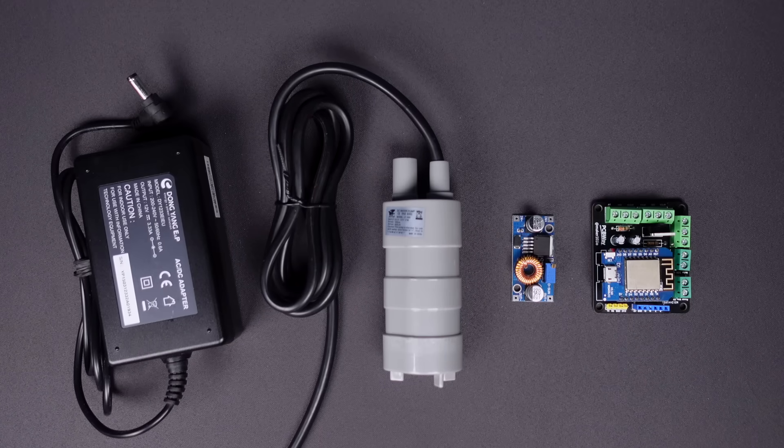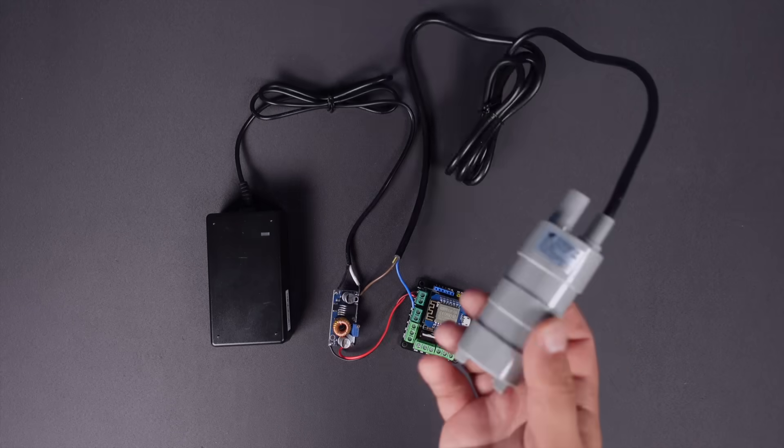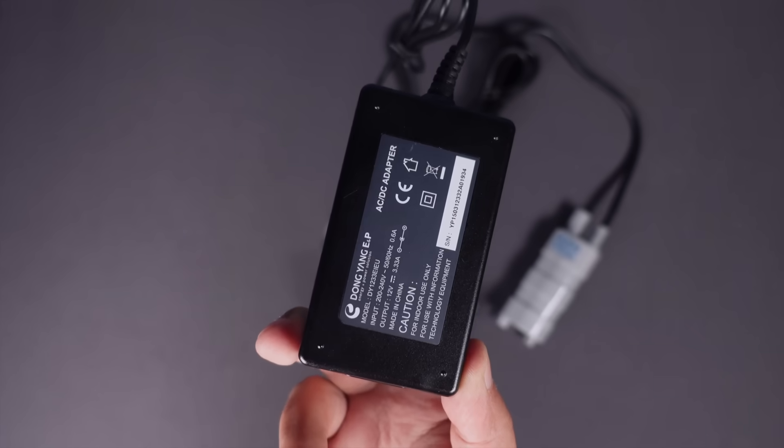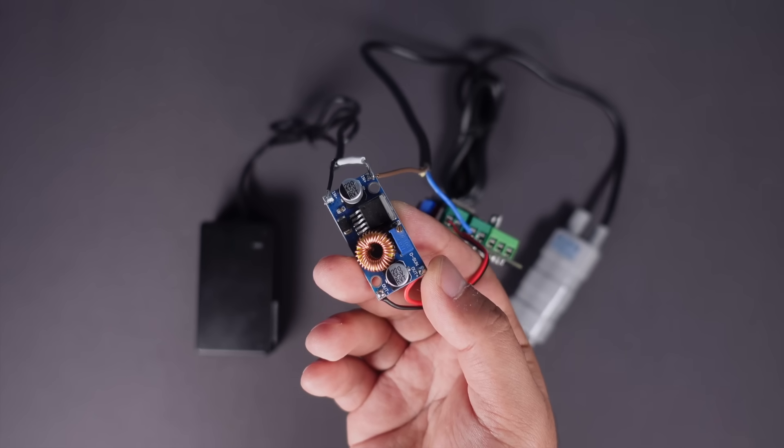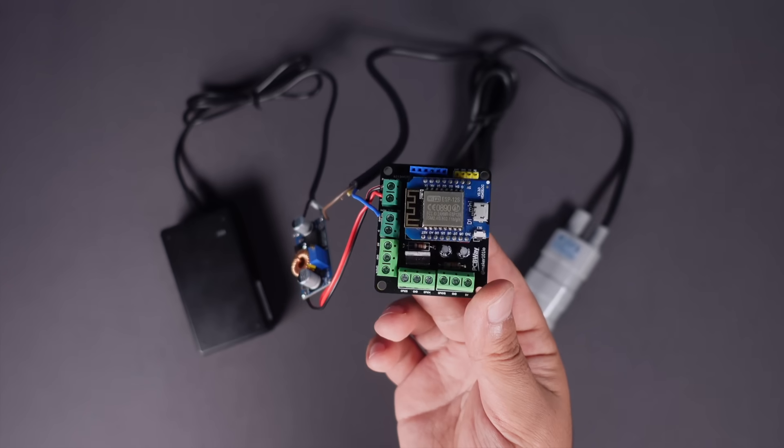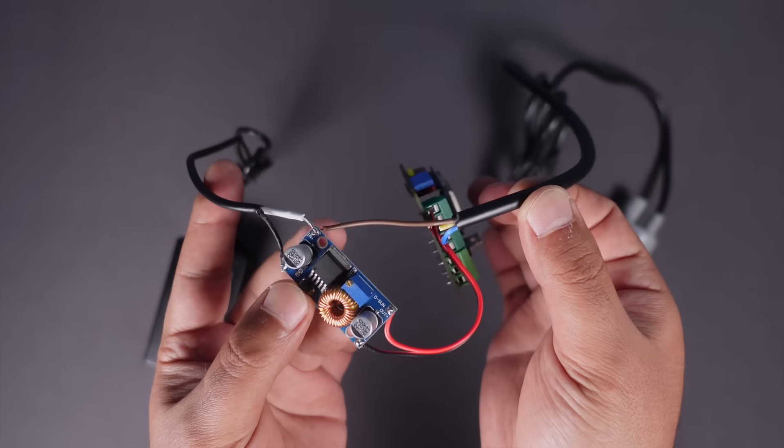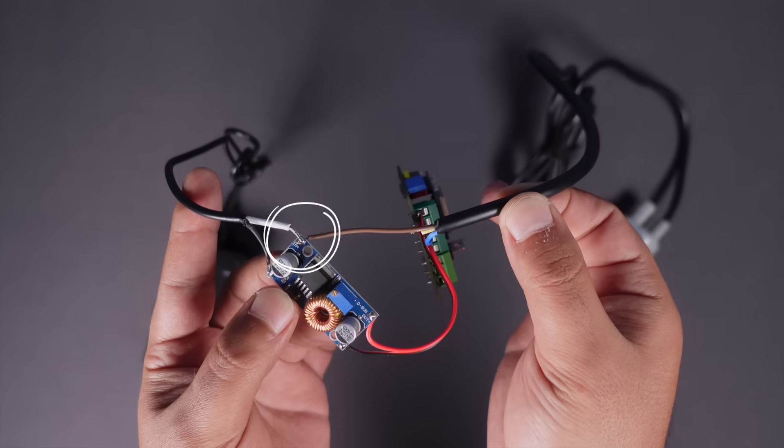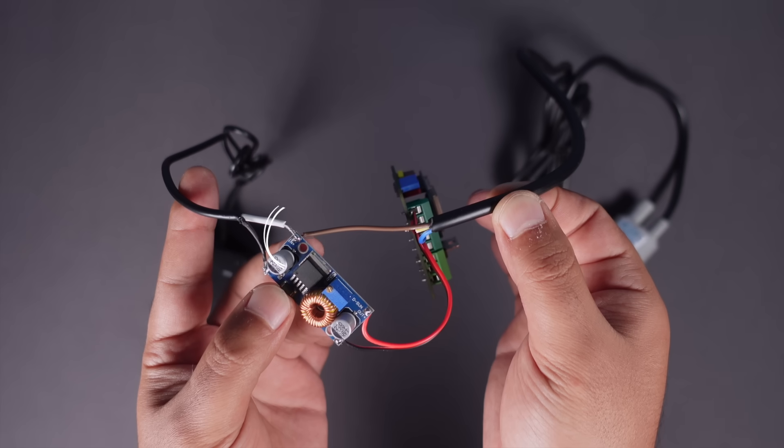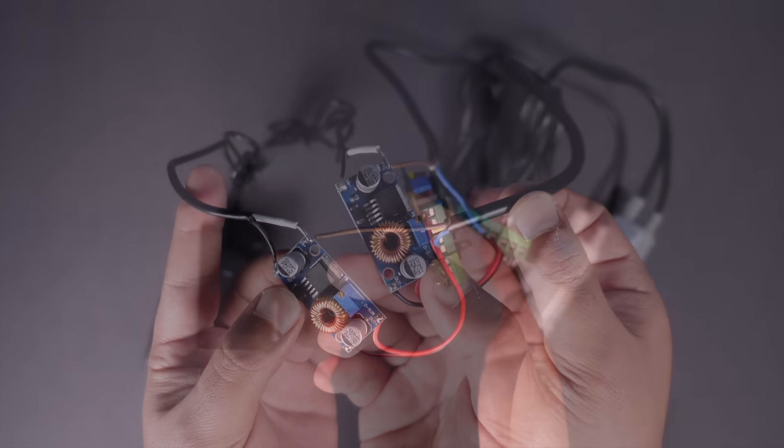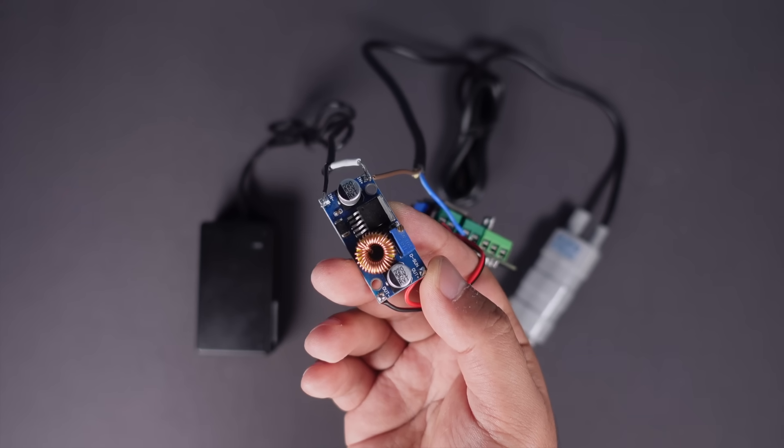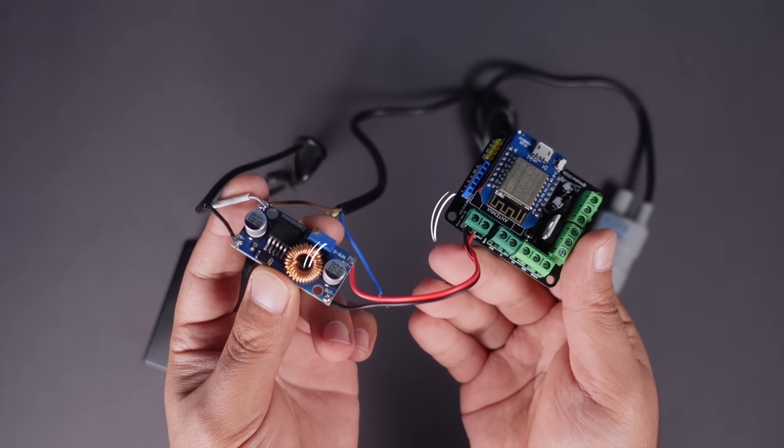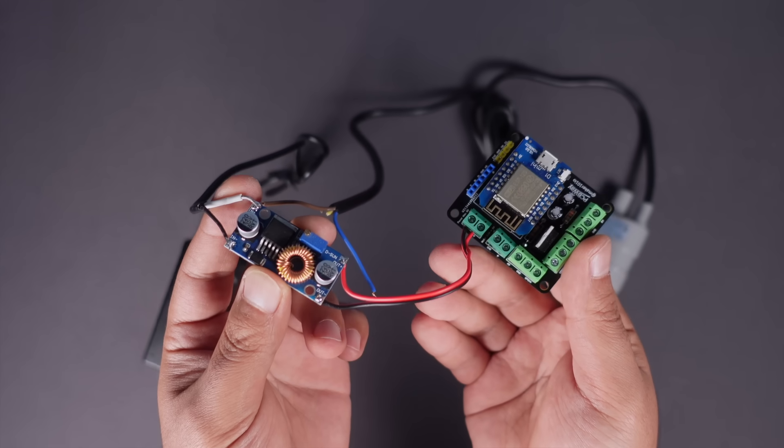In this section, we will connect the voltage regulator module. The water pump motor runs on a 12-volt voltage, so a 12-volt power adapter is used. A voltage regulator module is used to provide the 5-volt voltage required by the microcontroller. To the positive power input of the regulator, the positive legs of the adapter and the positive leg of the motor are connected in common. Only the ground leg of the adapter is connected to the regulator's ground input. The power outputs of the regulator are connected to the power inputs of the circuit board.